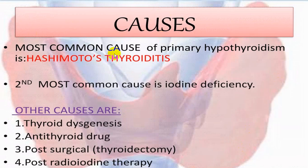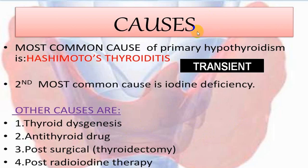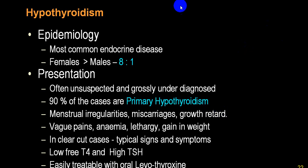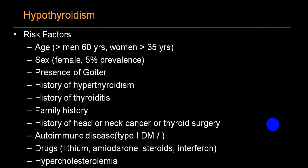The most common cause is Hashimoto's thyroiditis, followed by iodine deficiency. Other common causes include thyroidectomy, radiotherapy, and antithyroid drugs — these are iatrogenic. In Hashimoto's, it can be transient or permanent. The female-to-male ratio is approximately 10:1; about 90% of cases are primary hypothyroidism. Risk factors include age over 60 in males and over 35 in females.